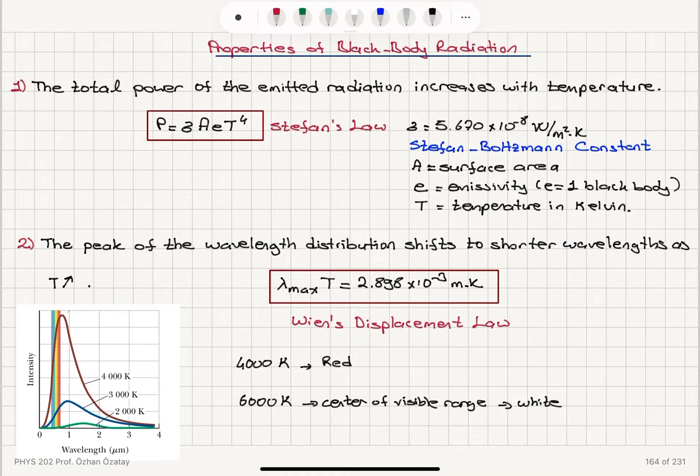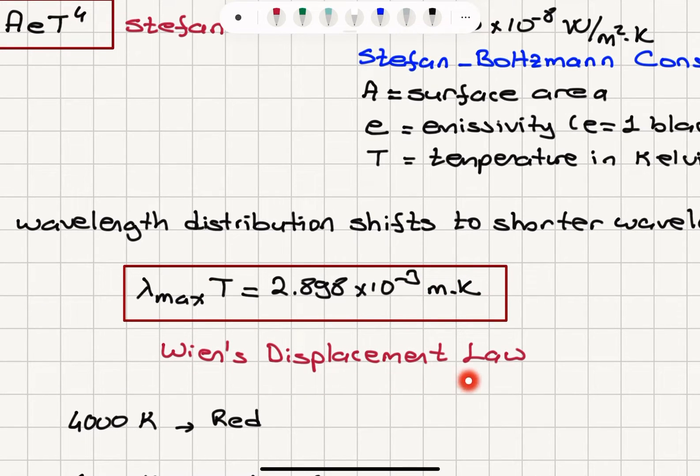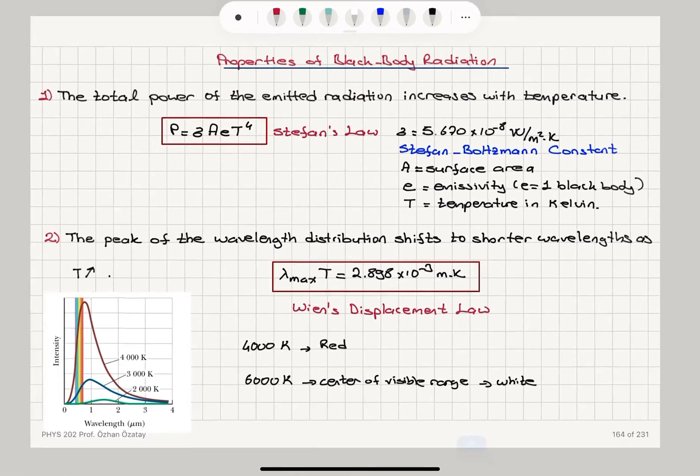Now, the fact that as the temperature increases, the maximum shifts to shorter wavelengths is given by Wien's displacement law. Lambda max times temperature is a constant: 2.898 times 10 to minus 3 meters Kelvin.